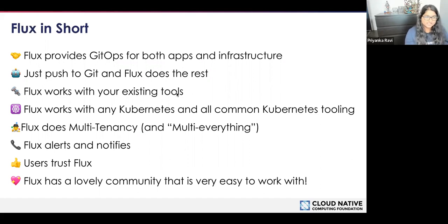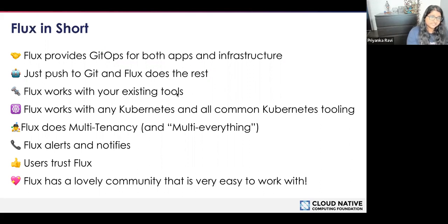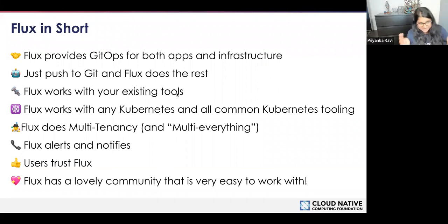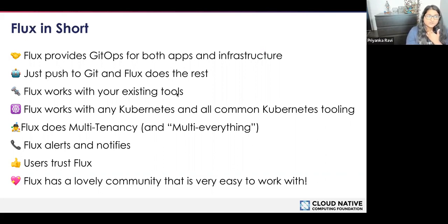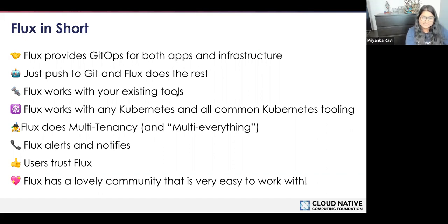These are eight things we like you to know about Flux — basically Flux in short. Flux provides GitOps for both apps and infrastructure; you just push and Flux does the rest. Flux works with your existing tools and with any Kubernetes and all common Kubernetes tooling. It does multi-tenancy and multi-everything. You can use it to alert and notify. Users trust Flux, and Flux has a lovely community that is very easy to work with. I'll come back to these statements at the end to elaborate more — I just wanted to get your feet wet with these concepts.